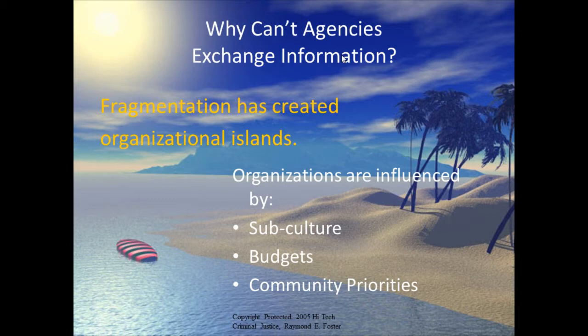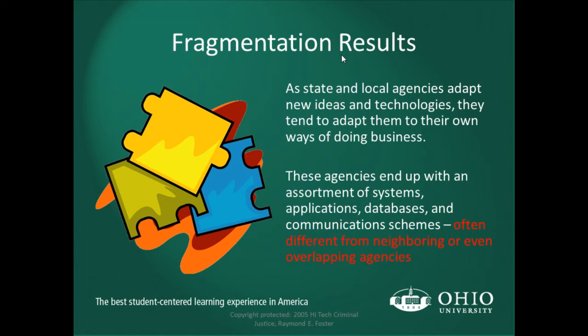Why can't agencies exchange information? Fragmentation has created organizational islands. Organizations are influenced by subculture, budgets, and community priorities — our community might feel strongly about neighborhood watches or certain prevention types, while a neighboring jurisdiction might feel differently. Not having consistency in information exchange and practices creates these islands. The entire criminal justice system tends to perform information management and exchange poorly because each island enters information separately, differently, and repeatedly.